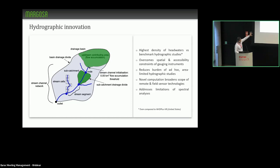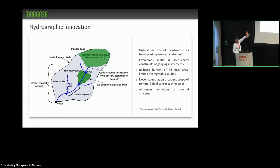This graph illustrates some of the novelty. The green area at the top shows a high-resolution flow accumulation threshold set at 0.05 square kilometers, giving the highest density of headwaters compared to some benchmark hydrographic studies. The drainage flow algorithm follows the concavity and convexity of the terrain more accurately, enabling a more realistic downhill flow of fresh water. This also allows regional, continental, and global scale studies, and the novel computation broadens the scope for remote and field sensor technology use.